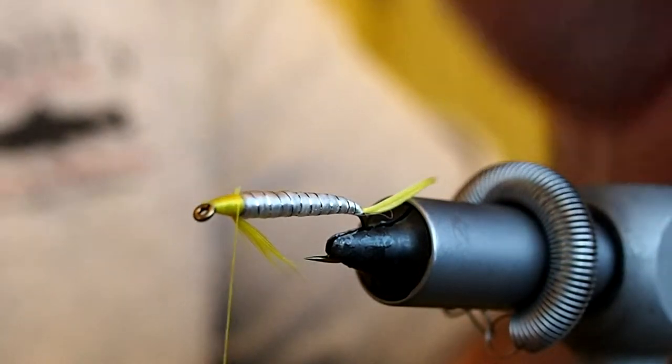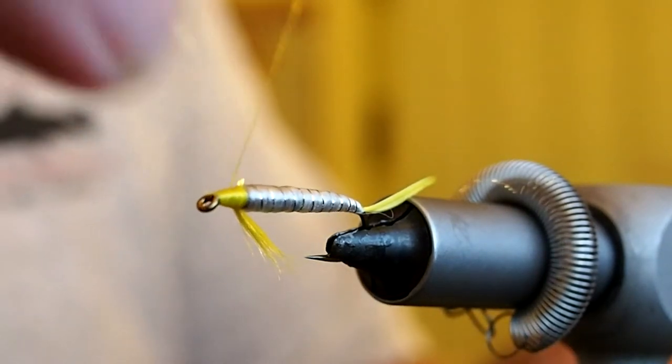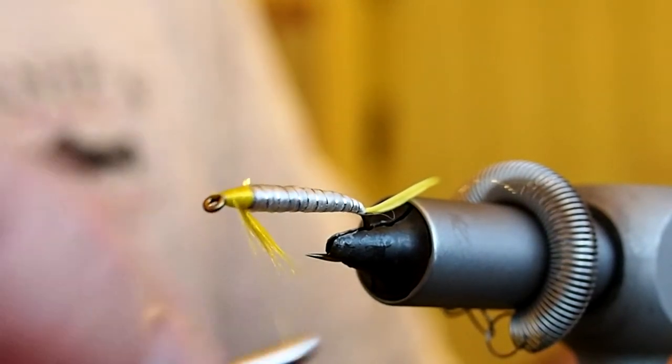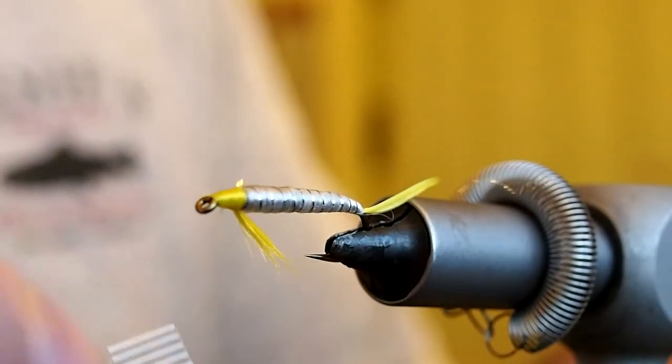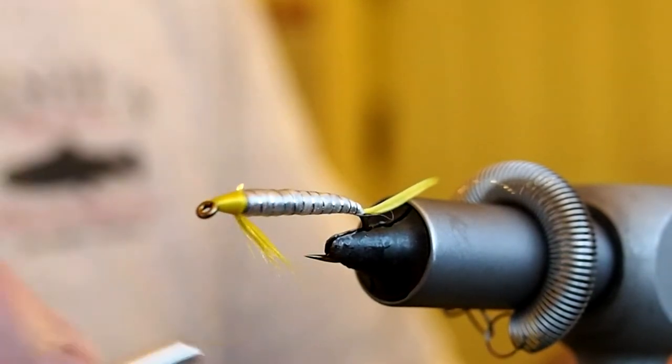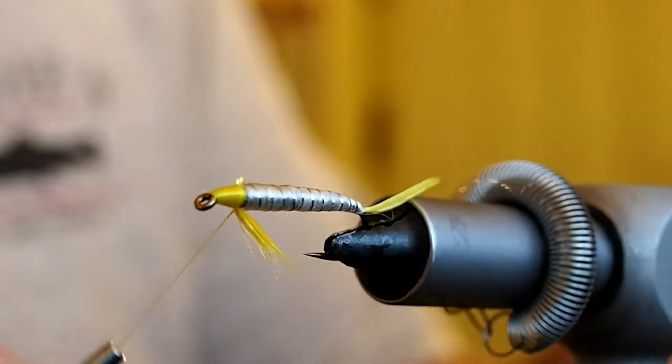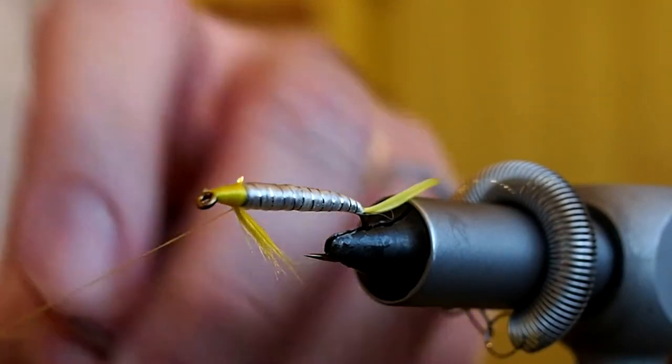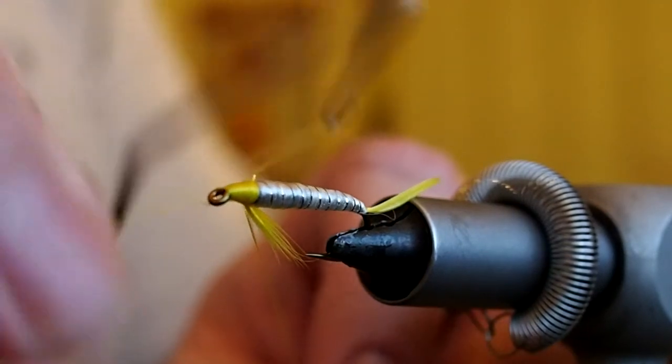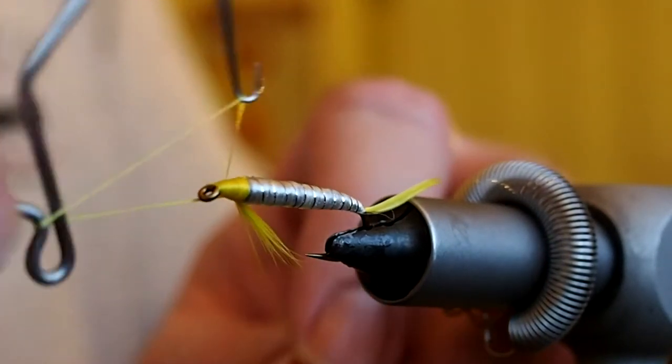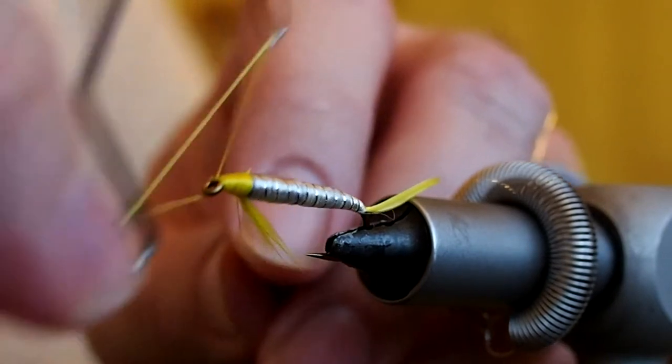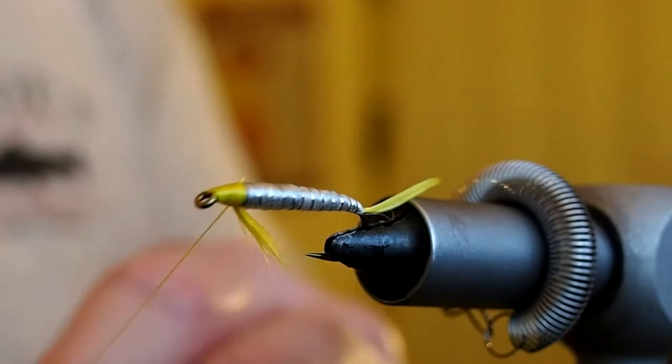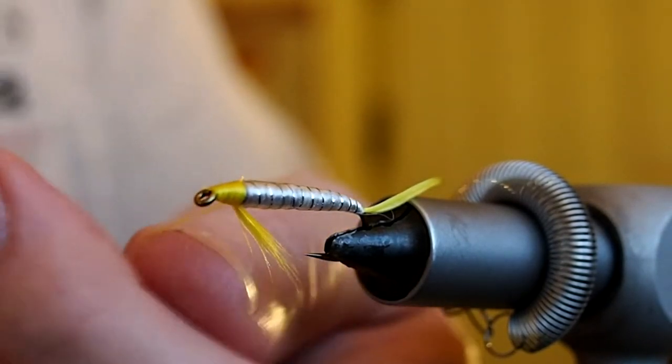Snip our tag. And just build up a decent sized yellow cone head. That looks pretty good. Go ahead and whip finish. And snip our thread.